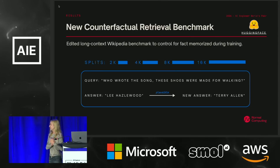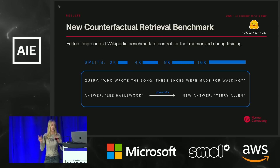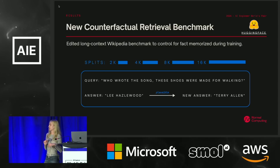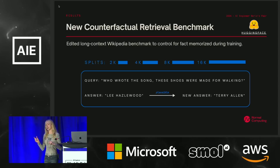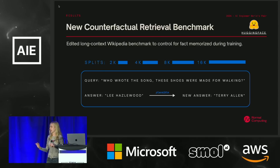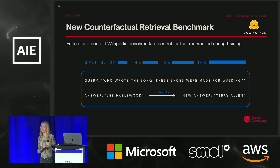We also just open-sourced a new counterfactual retrieval benchmark. This is a long-context benchmark where our input context is query-answer pairs, and the context to answer those questions ranges from about 2,000 tokens up to 16,000 tokens. The question might be, who wrote the song 'These Boots Were Made for Walking,' and then the corresponding Wikipedia snippet. We wanted to control for facts memorized during pre-training and fine-tuning. So we looked up — in this case the answer is Lee Hazelwood — and figured out that Terry Allen is a similar songwriter, a plausible but wrong answer. We replaced all instances of Lee Hazelwood with Terry Allen, and now we ask the model to retrieve this new, not factually correct answer, testing whether it's prioritizing what's being provided at inference time.